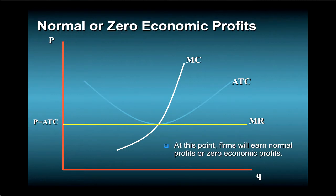At this point, firms will earn what economists call alternatively either normal profits or zero economic profits. In order to understand this condition, let's first talk about what we mean when we say zero or normal economic profits.